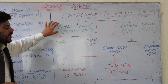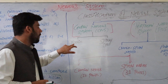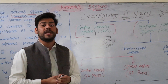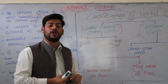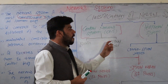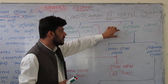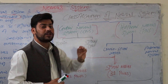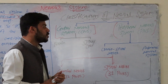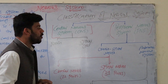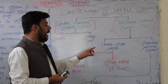The central nervous system consists of the brain and spinal cord. The peripheral nervous system is divided into two parts: cranio-spinal nerves and the autonomic nervous system.